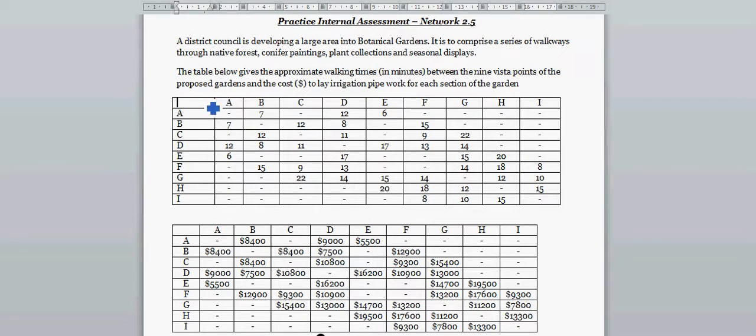So how would you read this table? These numbers are denoting the time. The distance, the time taken to go from A to B is seven minutes. The time to go from A to D is 12 minutes and so on. And to lay irrigation pipes from A to B is 8,400. So what it means is there is a path probably that takes from A to B, and there is a path from A to D and A to E and so on. So if the distance from A to B is seven, the distance from B to A is also seven.